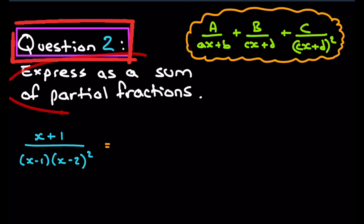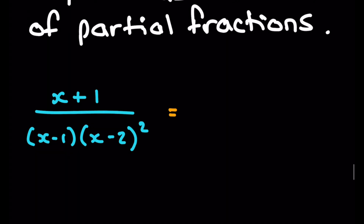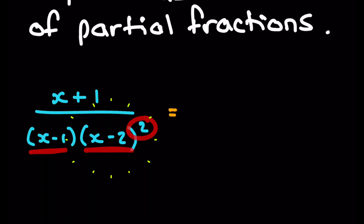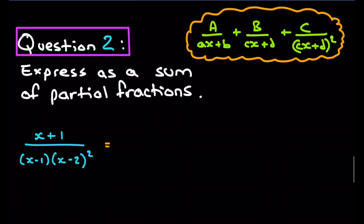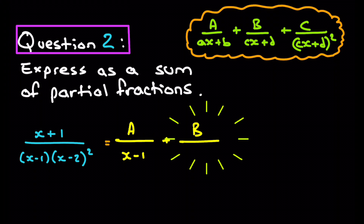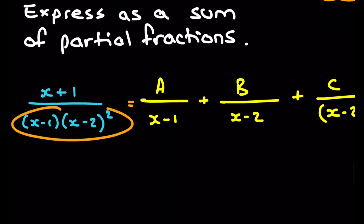Question 2: Express as a sum of partial fractions the following quotient. We can see again that we have one linear root and a second root that is squared — a repeated root. So we write A over the singular linear root, plus B over the other root (not squared), plus C over that root squared. We'll do the same thing as Question 1 and multiply everything through by the denominator.